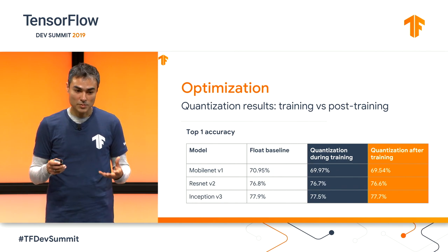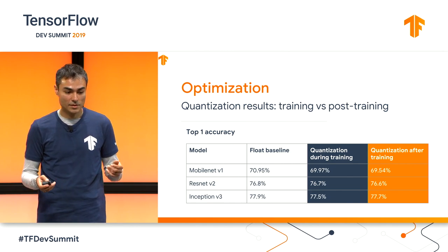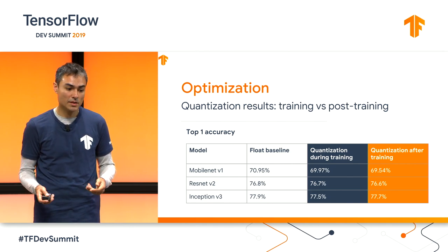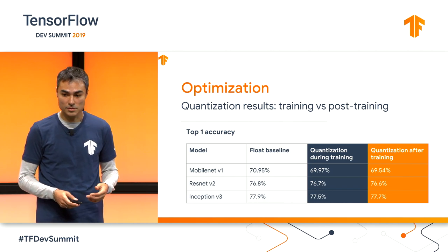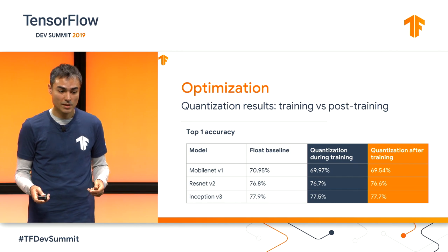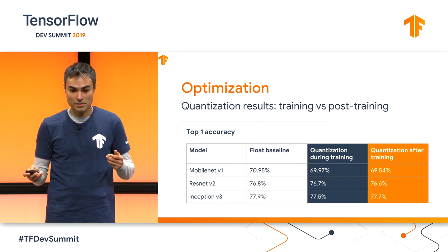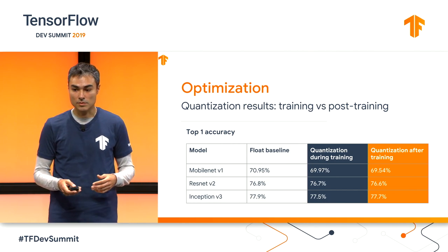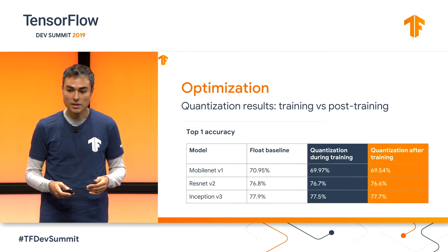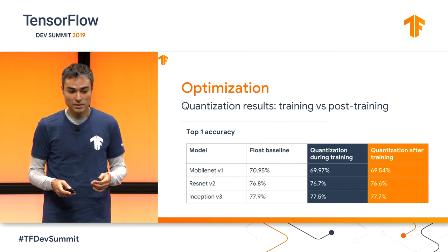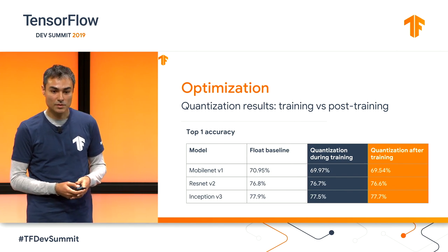These are preliminary numbers we see with this tool. We have the float baseline, and if you do quantize training, you get almost the same accuracy with all the benefits of quantization — compression and fast execution. Even further, if you don't want to invest in quantize training, or perhaps you just have a model you got somewhere, you can still quantize it with post-training quantization, and the accuracy is almost the same.